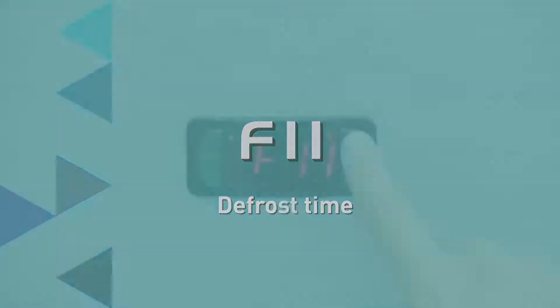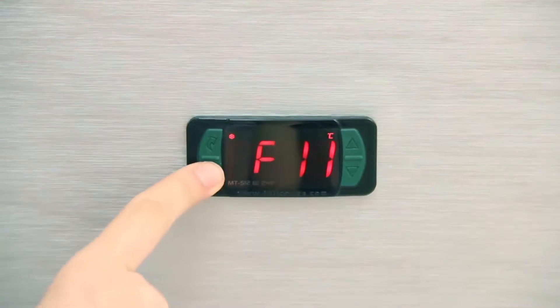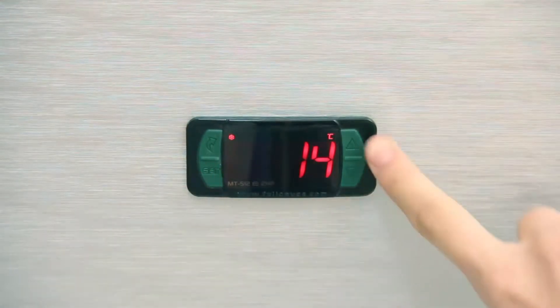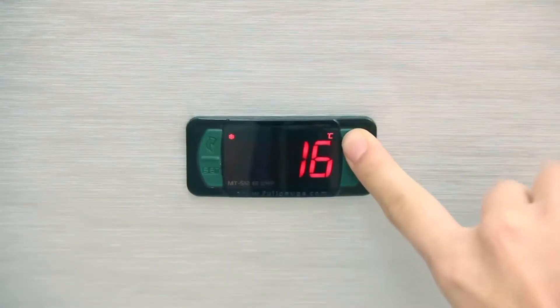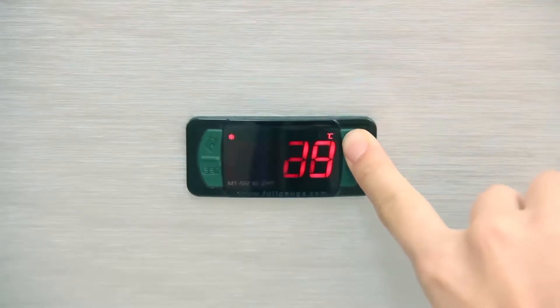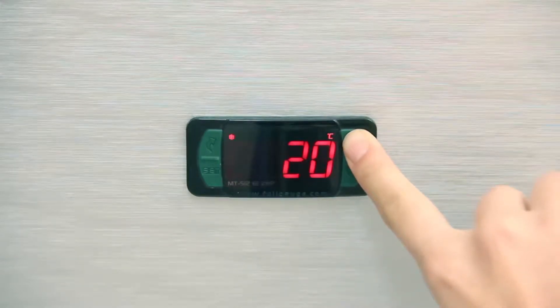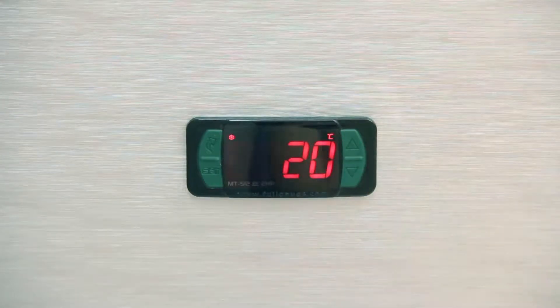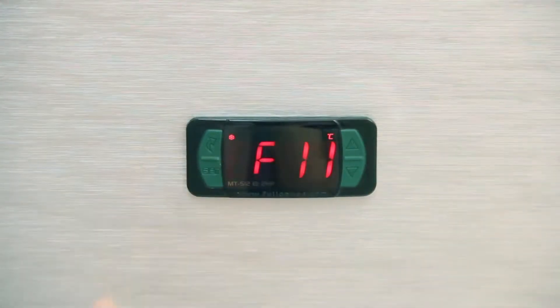F11 Defrost Time: It determines the minimum duration of the defrost time, that is, the time between cooling cycles. Select No so as not to adopt a minimum time, or provide a value between 1 and 999 minutes. In this example, we determined a time of 20 minutes.